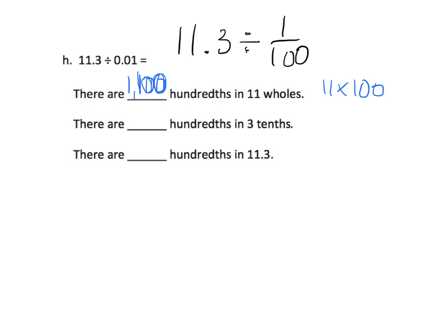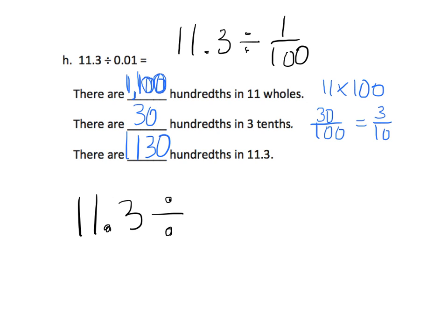Now, how many hundredths are in three tenths? We know that three tenths can be thought of as thirty hundredths. So how many hundredths are in thirty hundredths? The answer is thirty. Combining those, we get one thousand one hundred thirty hundredths in 11.3. So 11.3 divided by one-hundredth is equal to one thousand one hundred thirty.